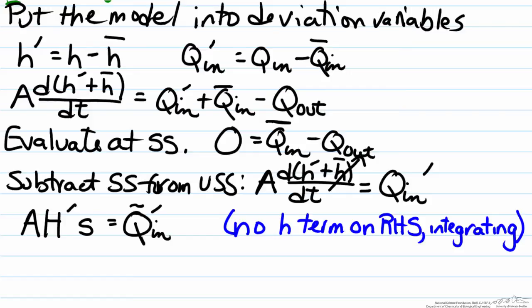So the terms on the right hand side act as an internal feedback regulating system for the process, but here that does not exist. So if we develop our transfer function relating the height of the tank to the inlet flow rate of the tank, we end up with 1/(As).